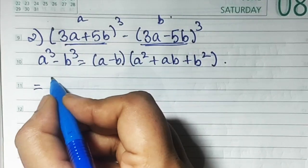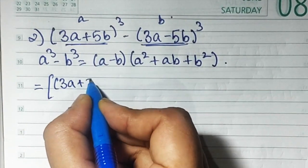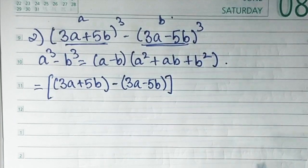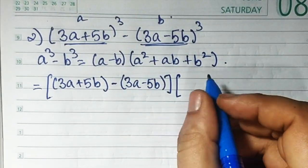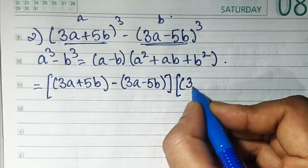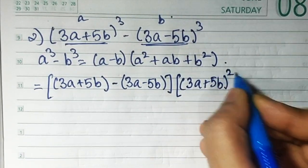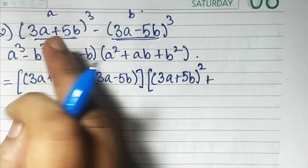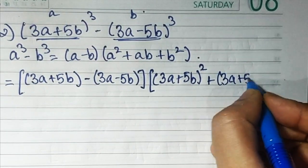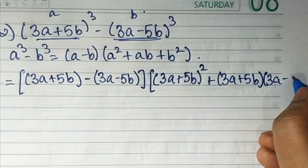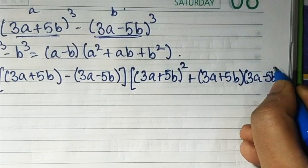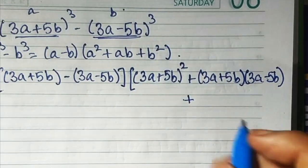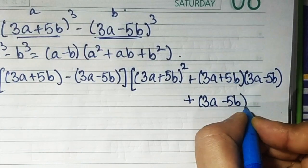Let's substitute. a minus b means (3a + 5b) minus (3a − 5b). Next bracket: a square means (3a + 5b) the whole square, plus a times b means (3a + 5b) multiplied by (3a − 5b), plus b square means (3a − 5b) the whole square.